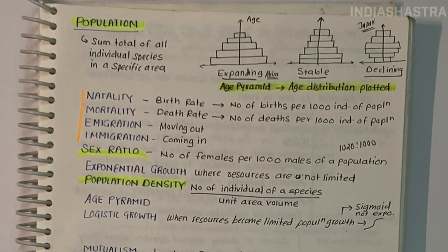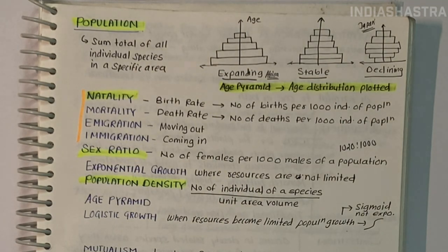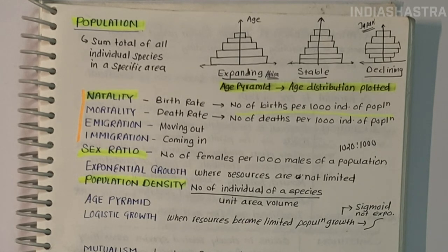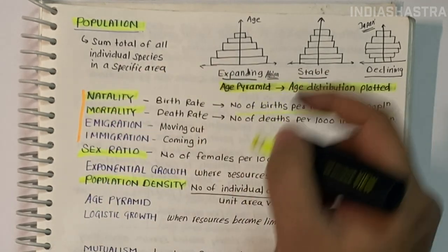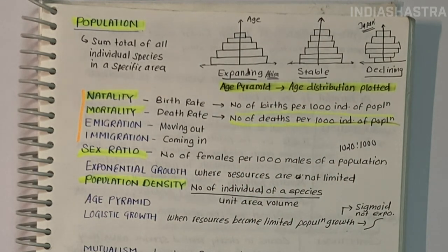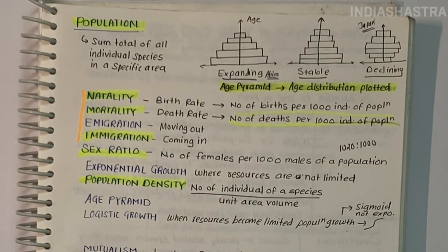Population growth is the increase in the number of people in a population over time. Natality refers to the number of births during a given period added to the initial density — for example, births per 1000 individuals. Mortality is the number of deaths during a given period — deaths per 1000 individuals. Immigration is the number of individuals of the same species that have come into the habitat from elsewhere during the time period under consideration.